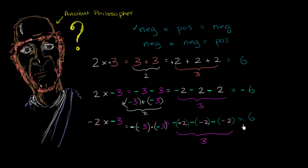Now you, as the ancient philosopher, feel pretty good. Not only is all of this consistent with the mathematics you know — the distributive property, the associative property, multiplying by 0 — it now actually makes conceptual sense. This is very consistent with your original notion of multiplication as repeated addition.